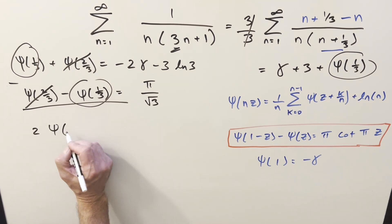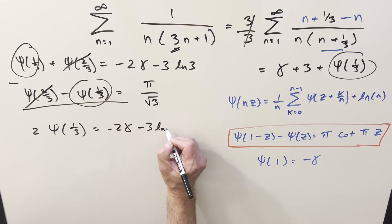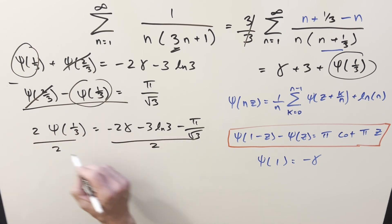On the left side, we get 2 times digamma 1 third. Subtracting on the right side, minus 2 times the constant, all this stuff minus pi square root of 3. Divide by 2 on both sides, divide by 2.